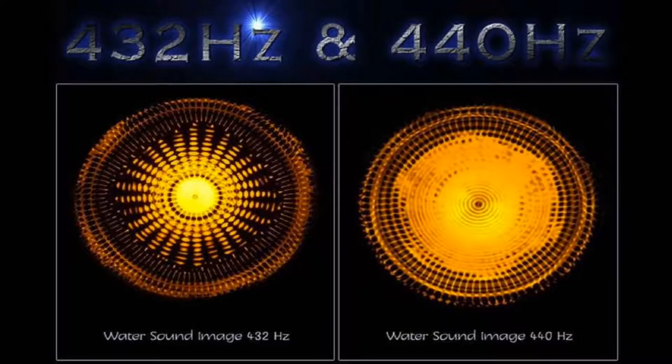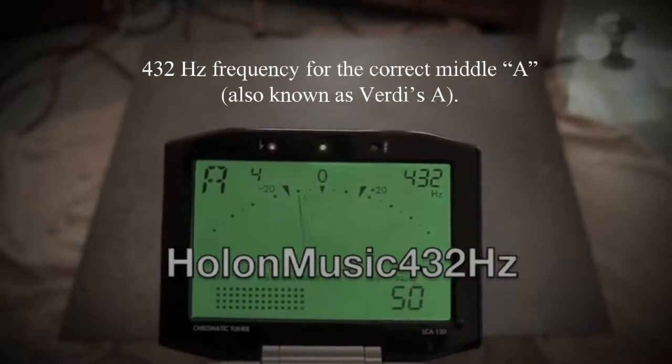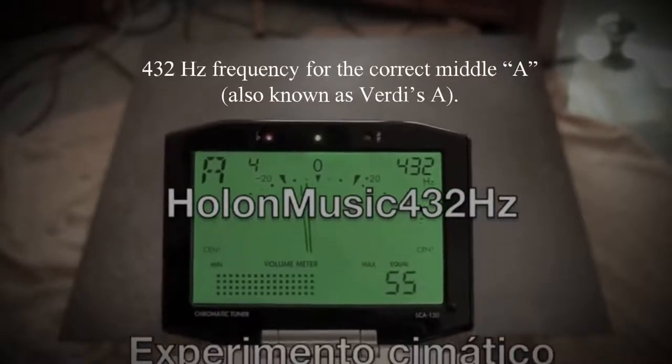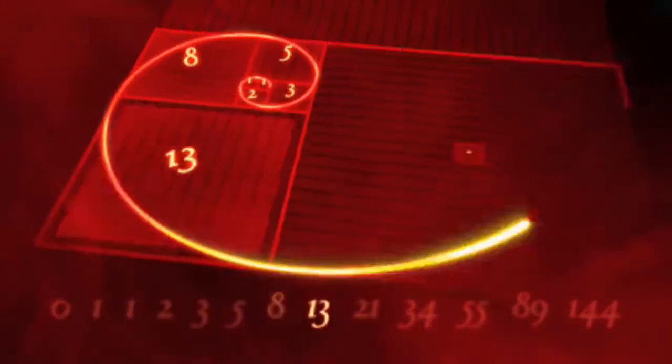They consider the 440 Hz middle A to be an abomination against nature. There are indeed clues that point to 432 Hz as a more natural frequency for the correct middle A, also known as Verdi's A. A pure tone of math fundamental to nature and is mathematically consistent with the patterns of the universe, vibrating with pi and the golden ratio.